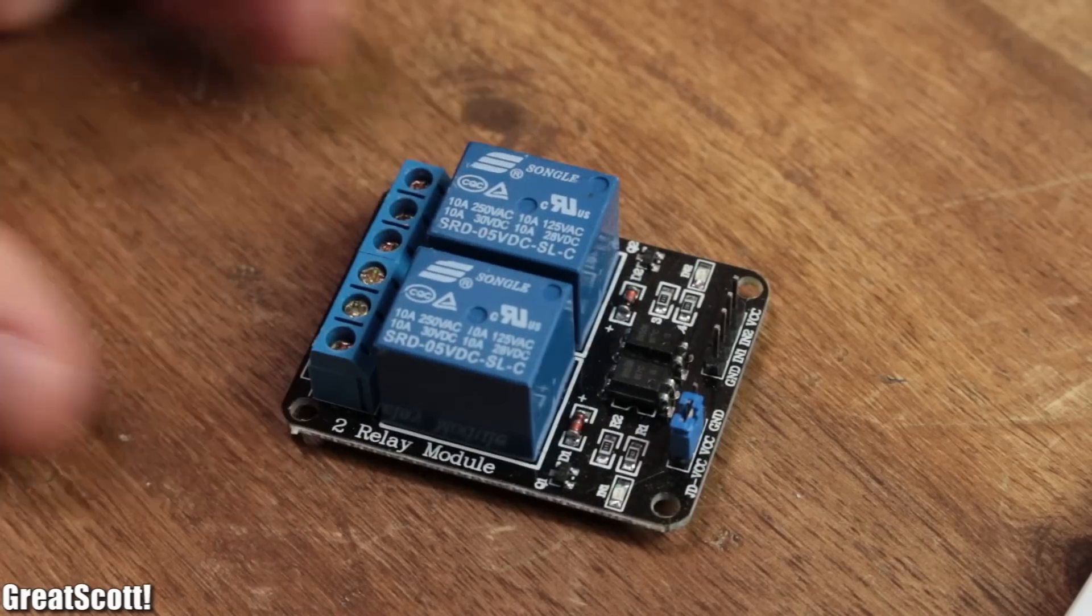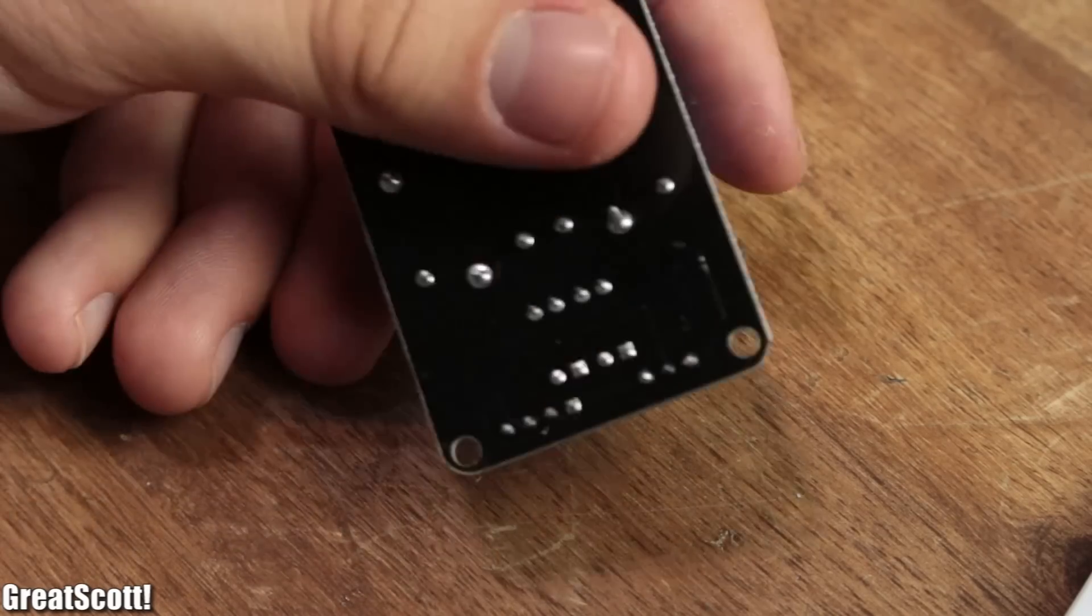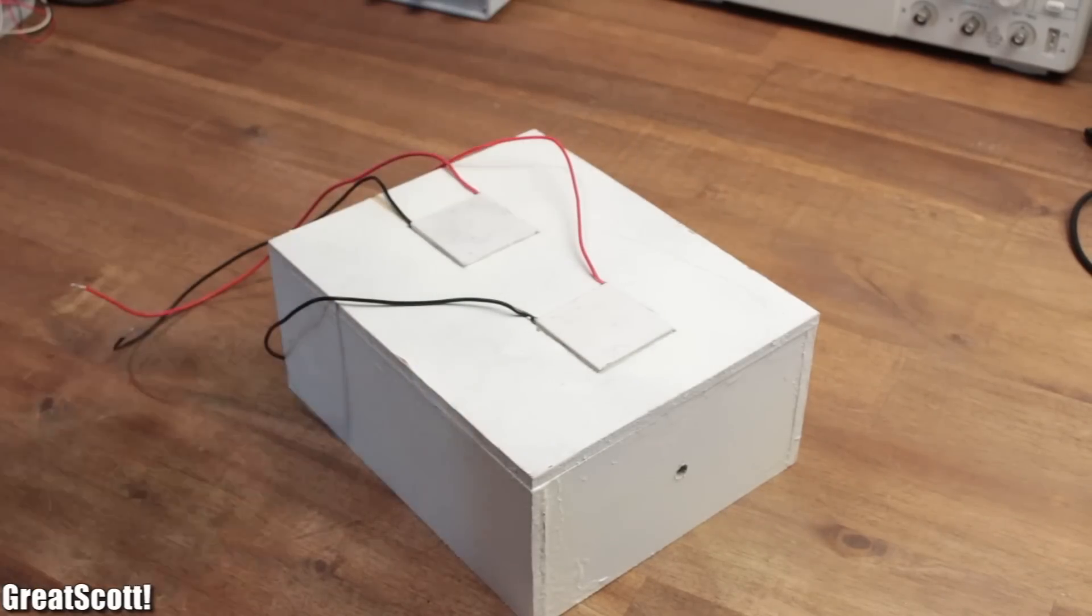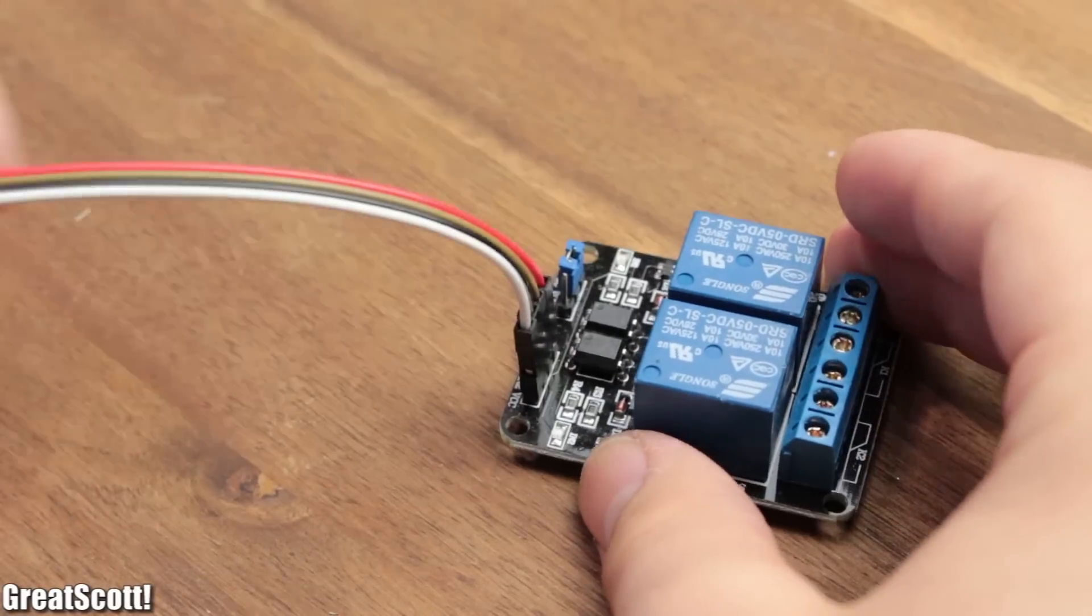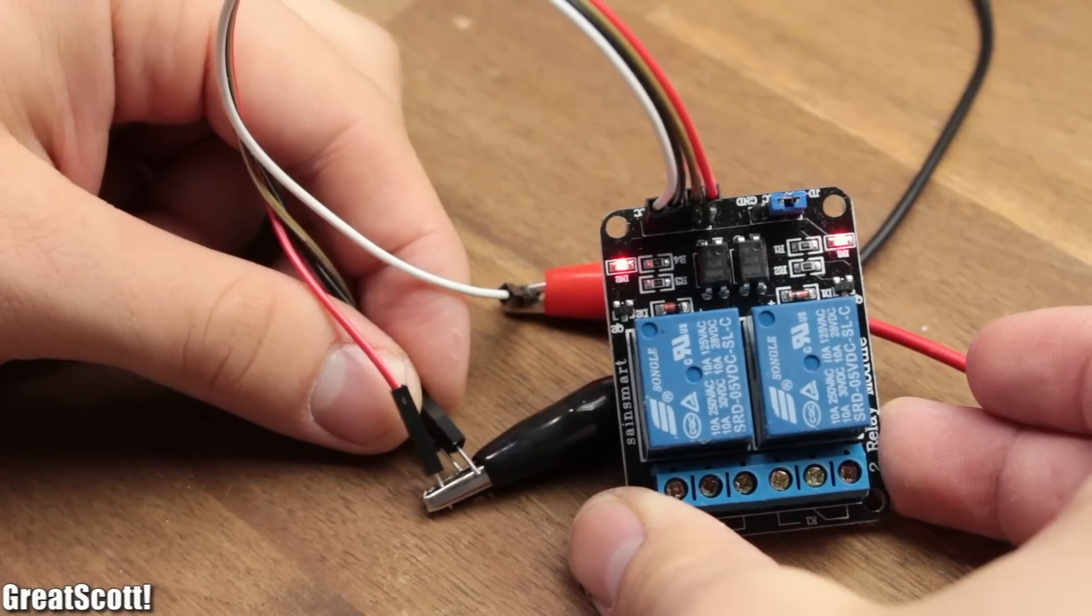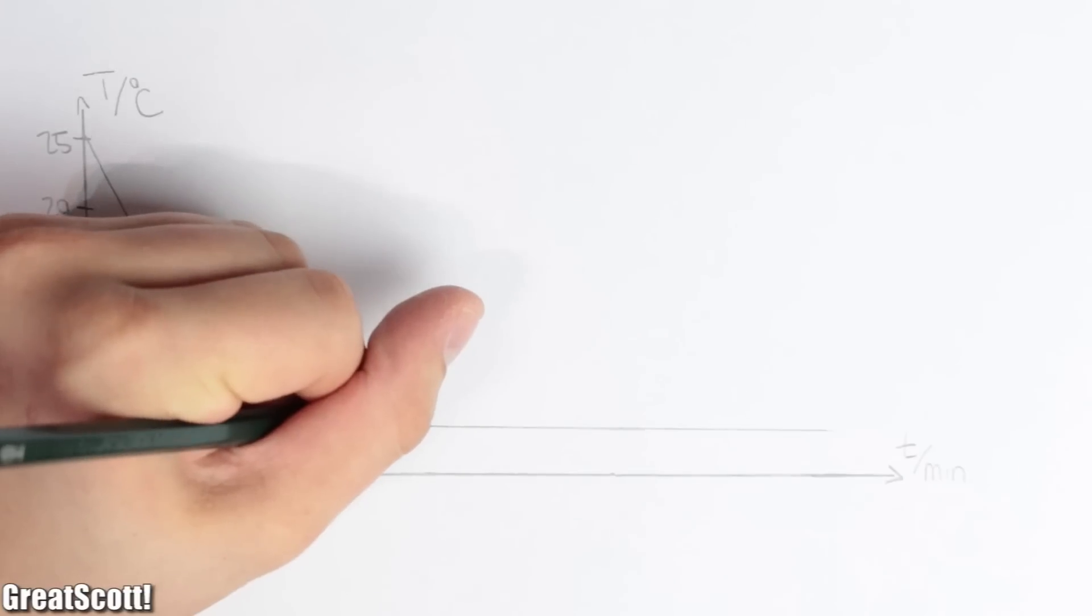I went with this two-channel relay board because firstly, I want to use two modules later on to cool down things a bit faster and secondly, it is just cheaper and easier to use this instead of building one on your own. Once the modules are turned off,